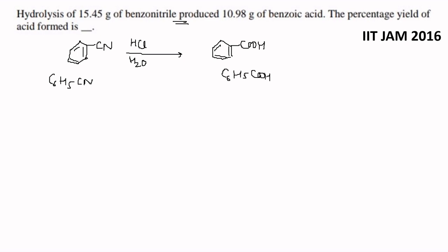Yahan se agar hum inka molecular weight nikalein: carbon ka weight 12 into 6 carbon hai, plus 5 into 1, plus 1 carbon 12, plus nitrogen 14. Yahan se jab is poore ko add karenge, so this comes out to be 103 gram — that is the molecular weight of benzonitrile.